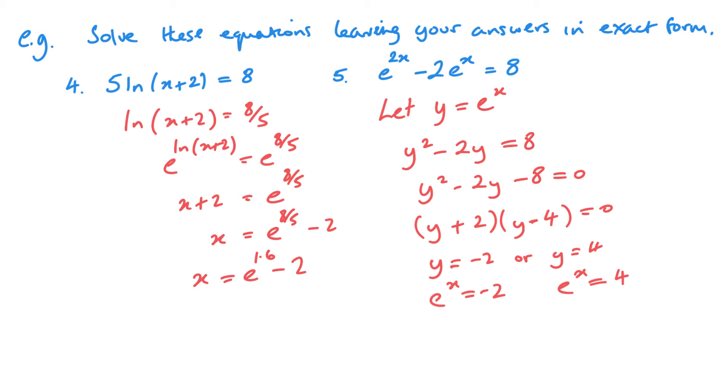If you think of the graph y equals e of x, y cannot be a negative value because it doesn't exist on that graph. It's not defined for that. So this one we can essentially then get rid of and we're only solving e of x equals 4. So taking logs of both sides here, we end up with x equals ln 4, or we can write this as 2 ln 2.